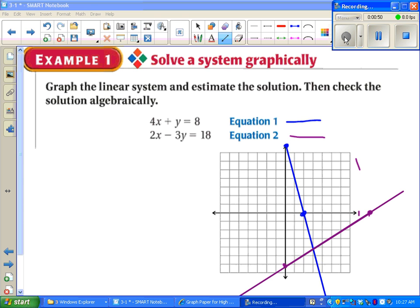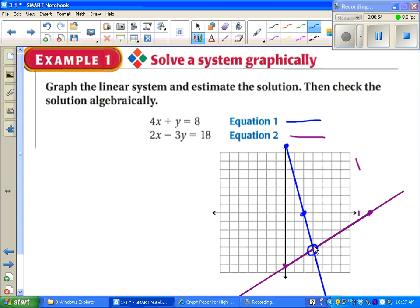After I graph my two lines, it looks like the intersection point is right about there, which seems to be at 3 for x, and negative 4 for y.